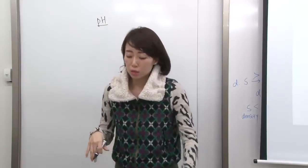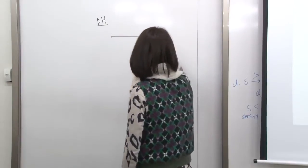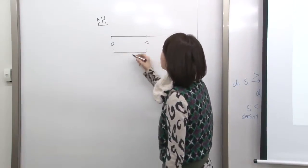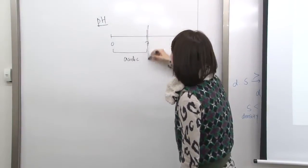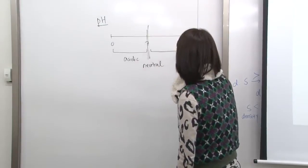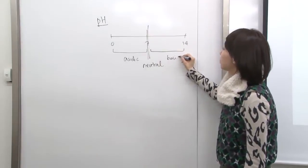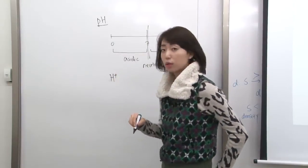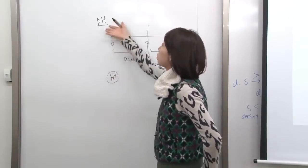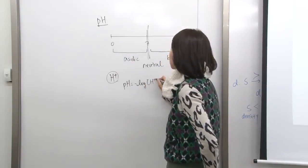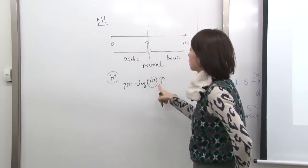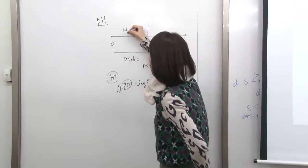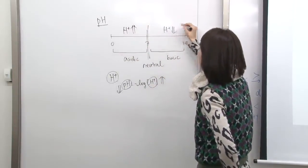pH is a measure of acidity, ranging from 0 to 14. pH from 0 to 7 is acidic, right at 7 is neutral, and greater than 7 to 14 is basic. pH is defined as negative log of H⁺ concentration. If you have lots of H⁺, the log value is large and with the negative sign pH becomes low. So in acidic conditions H⁺ concentration is high, and in basic conditions H⁺ concentration is low.